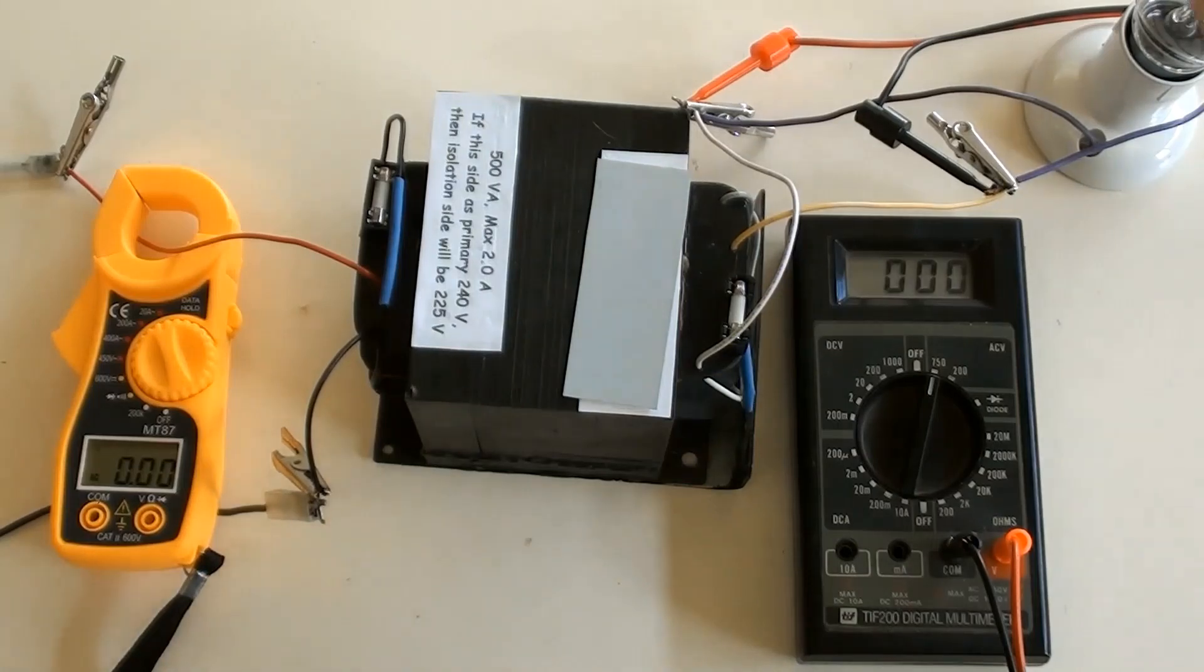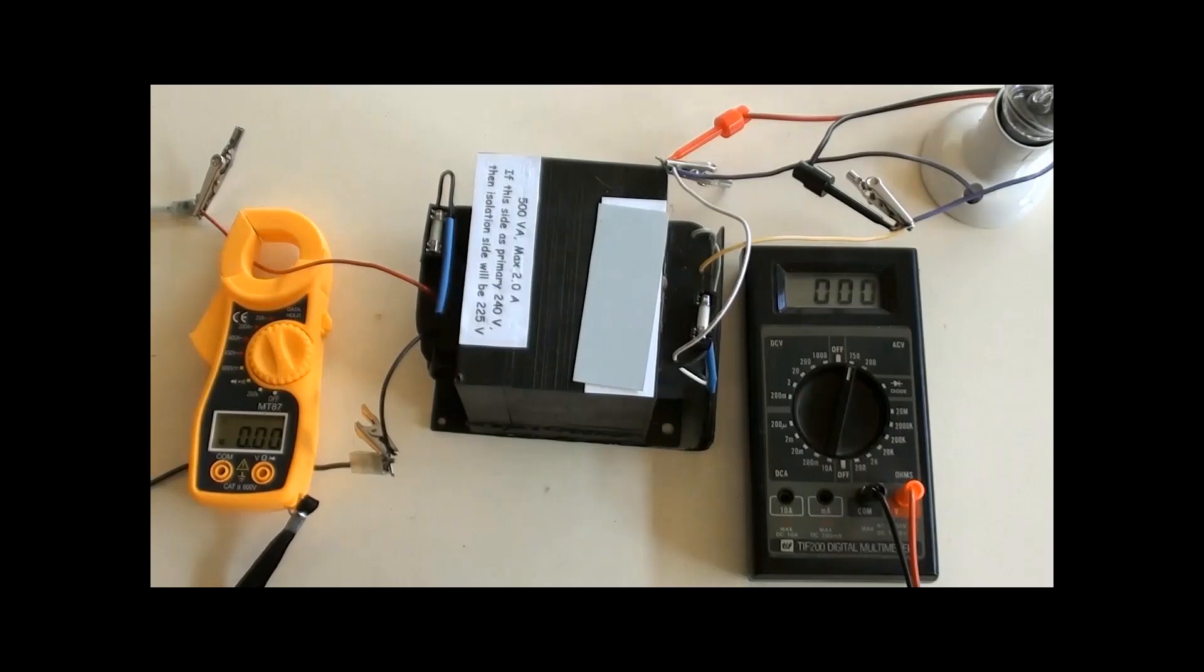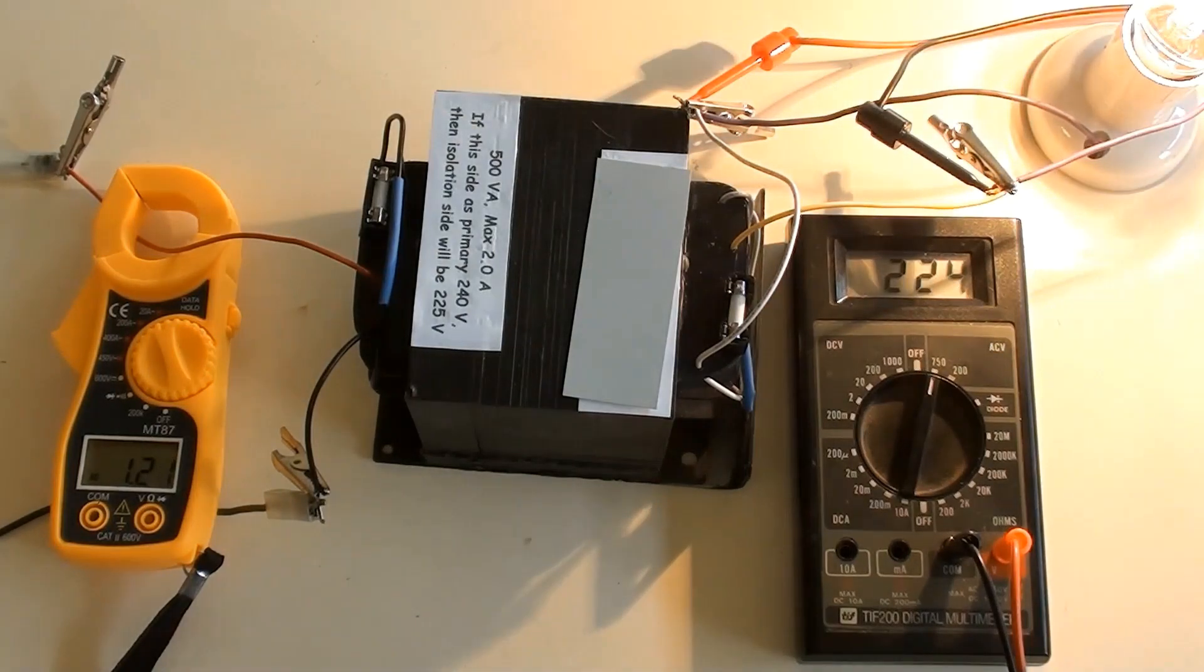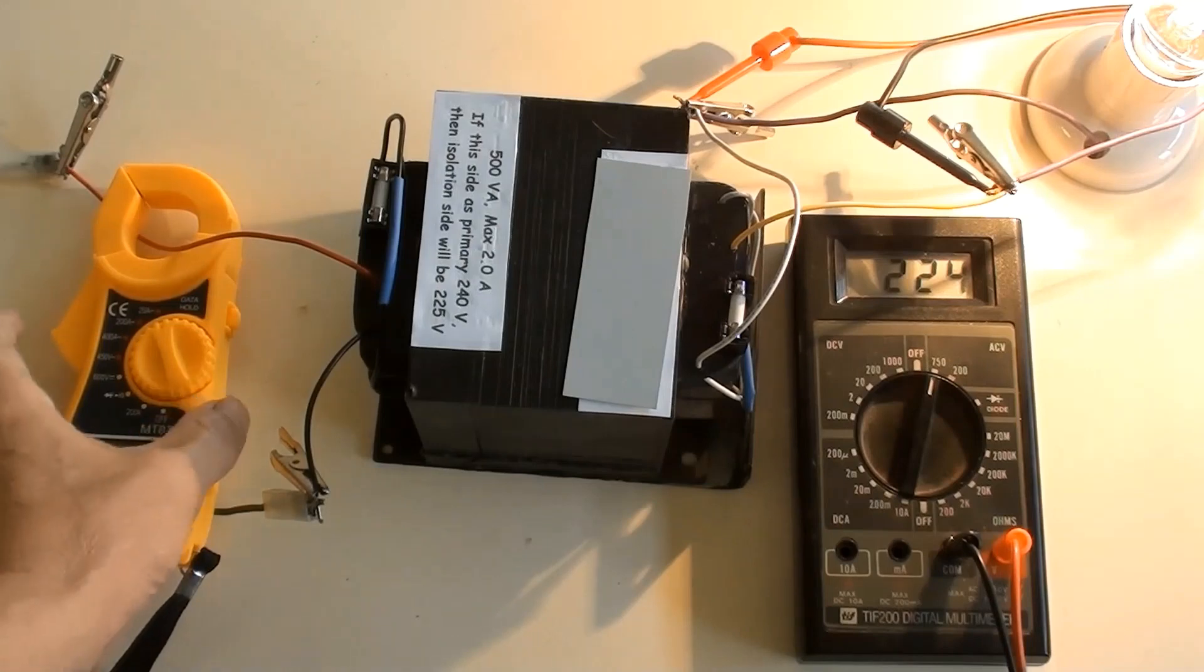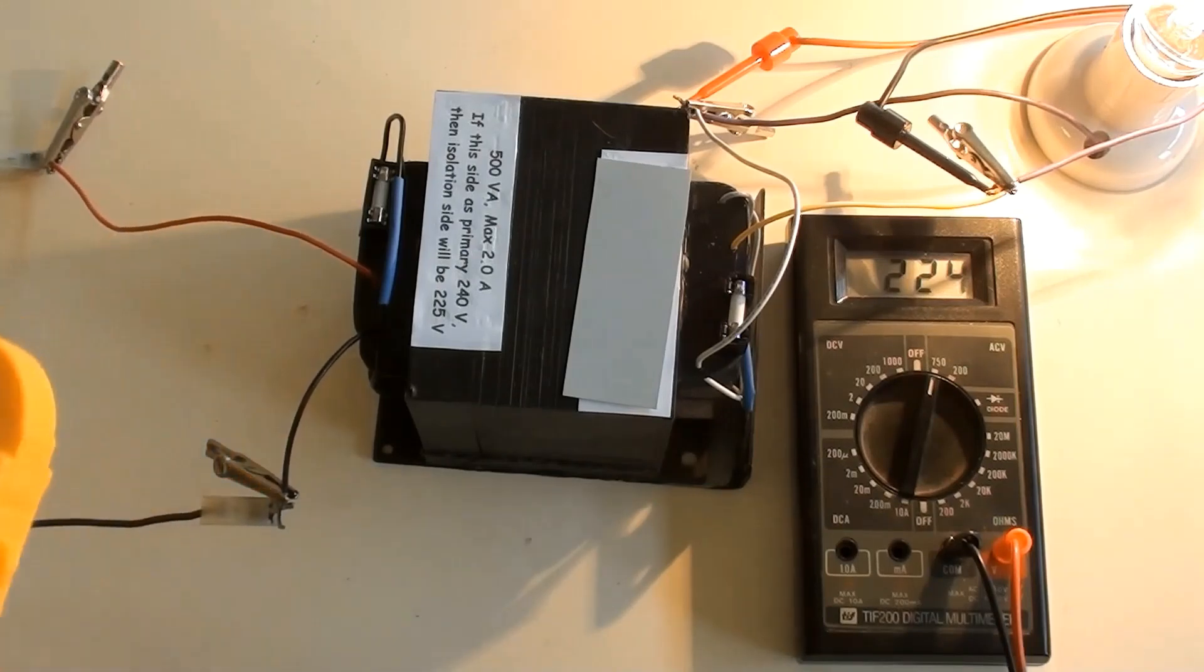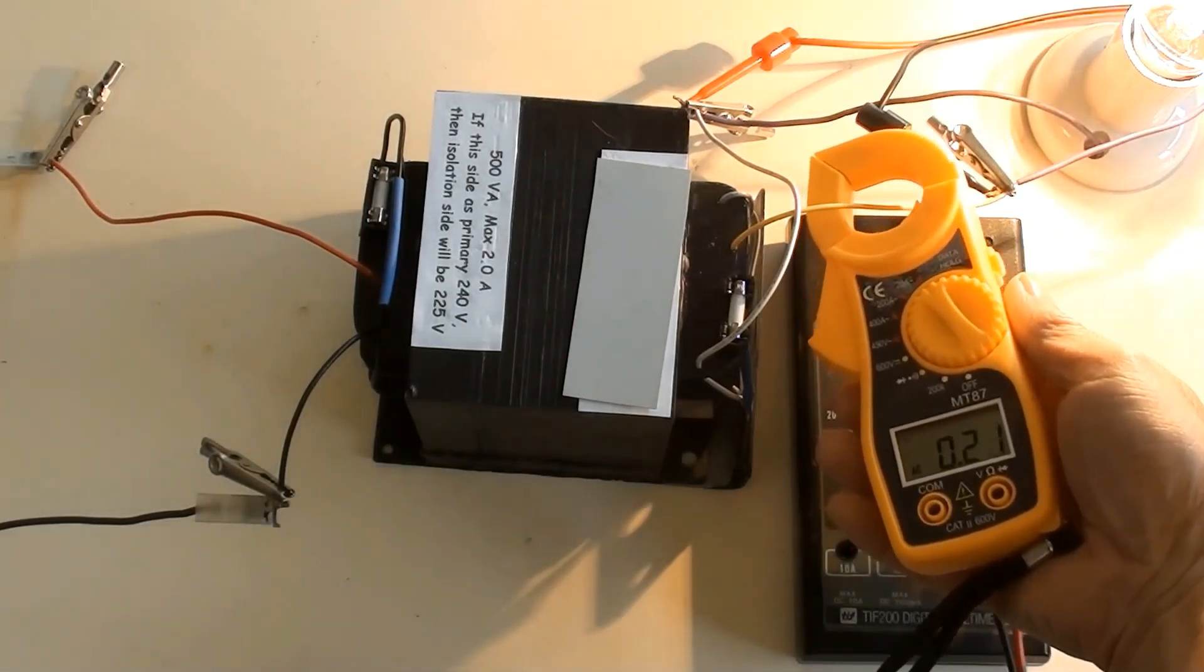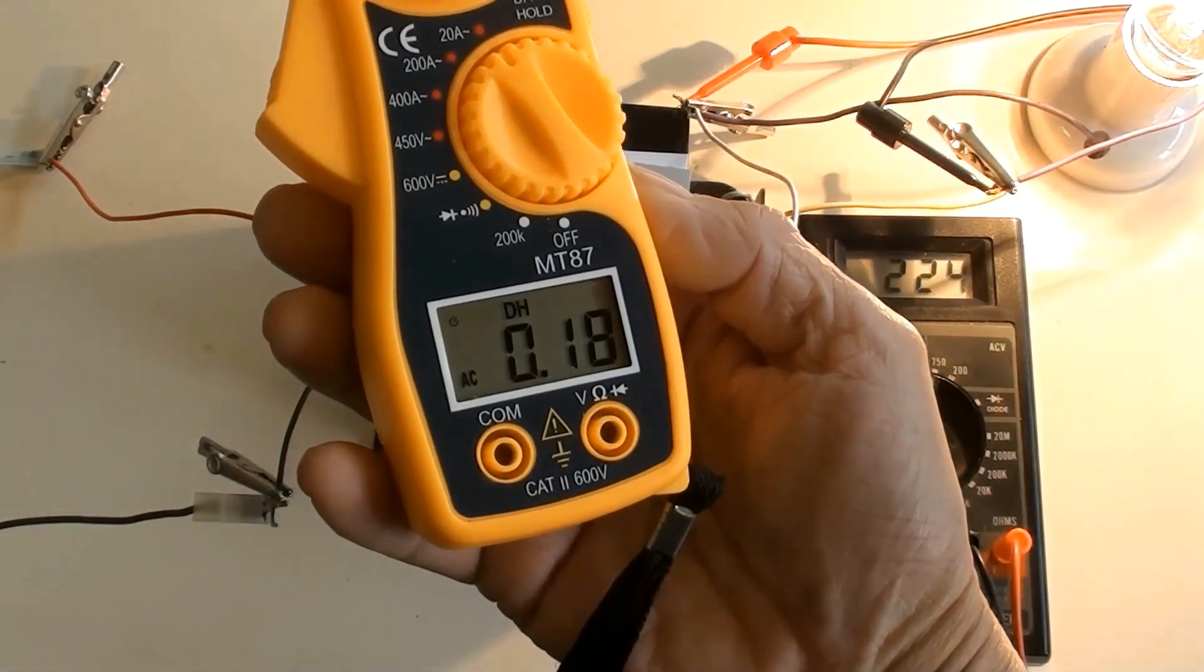A globe with 240 volts and 100 watts has been connected to the isolation side. A clamp meter with AC current function selected and a multimeter with AC voltage function selected have been connected already. Switched live power on. Let AC current indicated by clamp meter stabilize. Right now the globe's voltage is 224 volts.